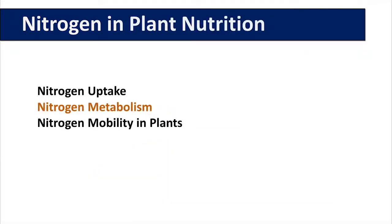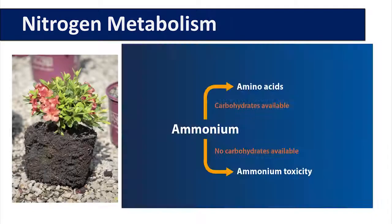Nitrogen metabolism: if there are sufficient carbohydrates in the plant, ammonium is immediately assimilated into amino acids which are then incorporated into protein structures. If there are insufficient carbohydrates, the plant will have to assimilate what it can into amino acids. However, ammonium cannot be stored, and therefore ammonium toxicity can occur.